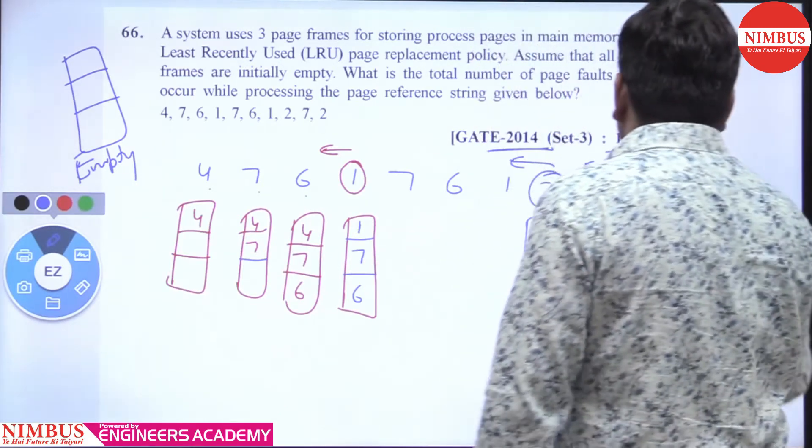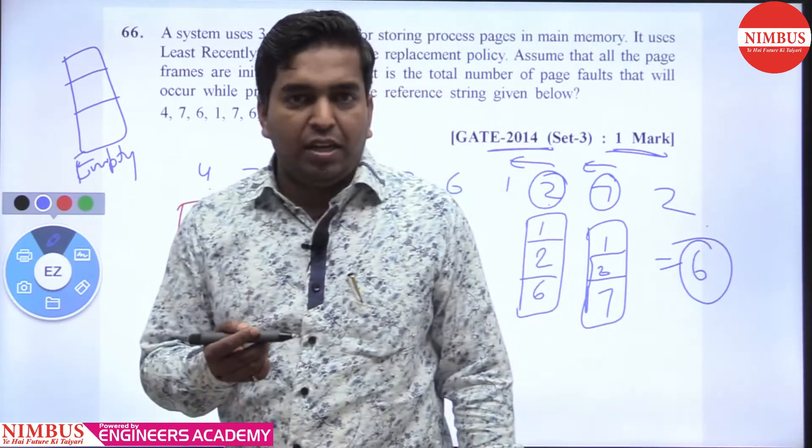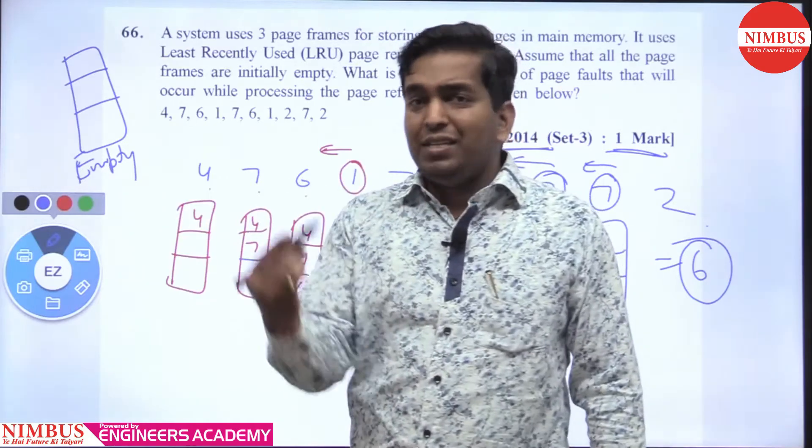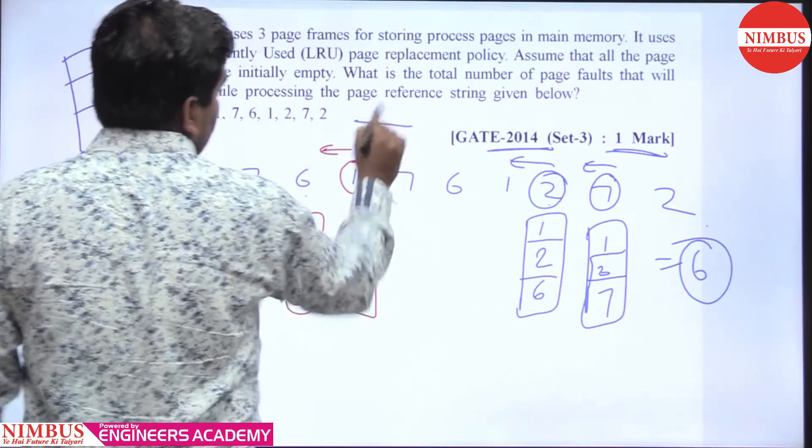How many page faults? 4, 7, 6, 1, 2, 7. When we apply LRU least recently used, the number of page faults is 6. So the answer is 6.